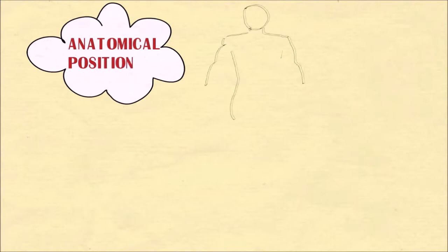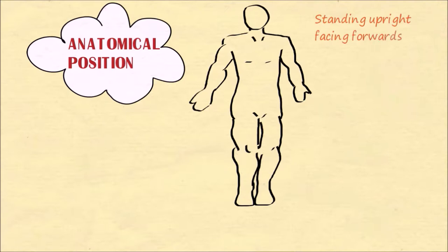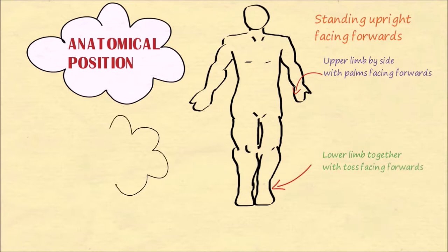Anatomical position is defined as a person standing upright and facing forwards. The upper limbs are by the side with the palms facing forwards, and the lower limbs are together with the toes facing forward.